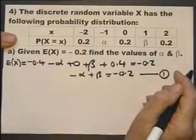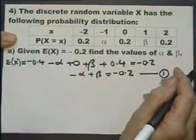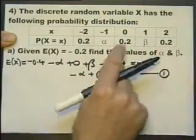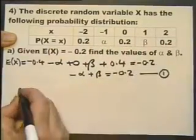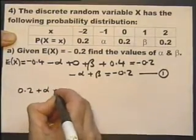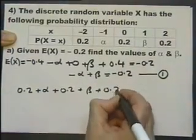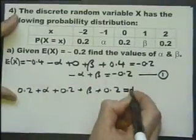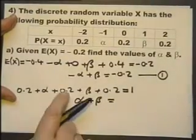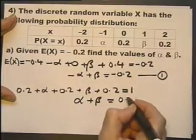We need another equation connecting alpha and beta. We should appreciate that all the probabilities in a probability distribution must add up to 1. Adding them all together: alpha plus beta plus 0.2 plus 0.2 plus 0.2, which is 0.6. Subtracting 0.6 from both sides gives us alpha plus beta equals 0.4. That's our second equation.